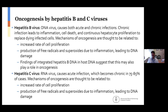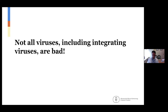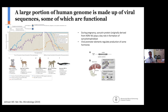Now that I've covered all of the bad viruses, I just want to highlight that not all viruses, including integrating viruses, are bad. In fact, some of the portion of the human genome made up of viral sequences are actually functional. This is just a graph that demonstrates that some of these viral sequences are evolutionarily selected for — meaning there is a reason that our genome has kept them. For many of these sequences we still really don't understand why the human genome would carry them, but we know that at least some of them do carry a function.